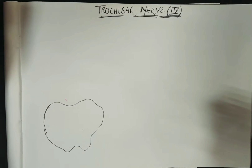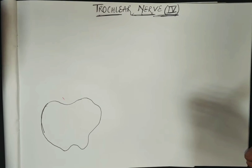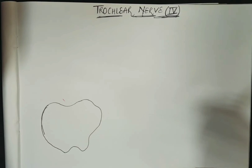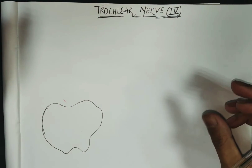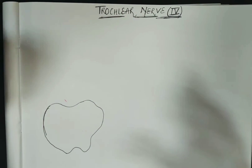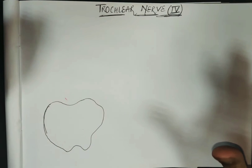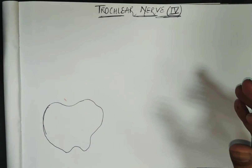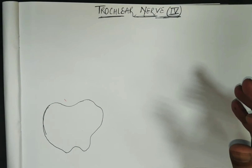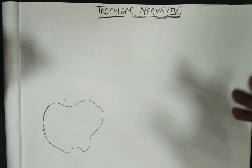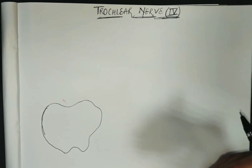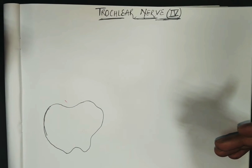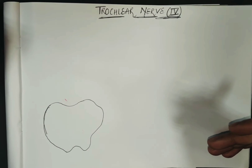In this video we will discuss the fourth cranial nerve, the trochlear nerve. It is a purely motor nerve and the smallest cranial nerve, but it has a very long intracranial pathway. It supplies only one extraocular eye muscle.